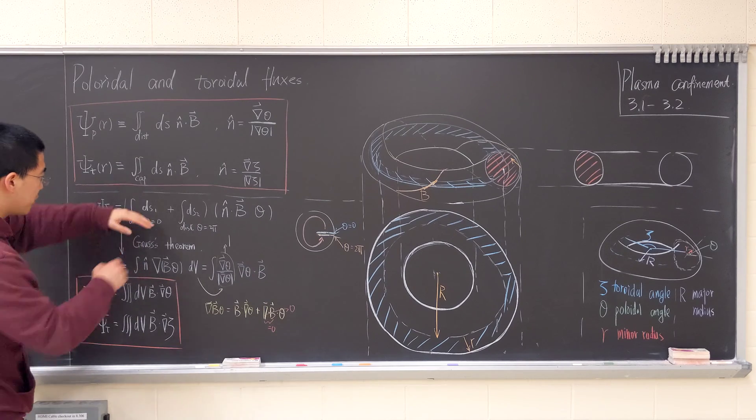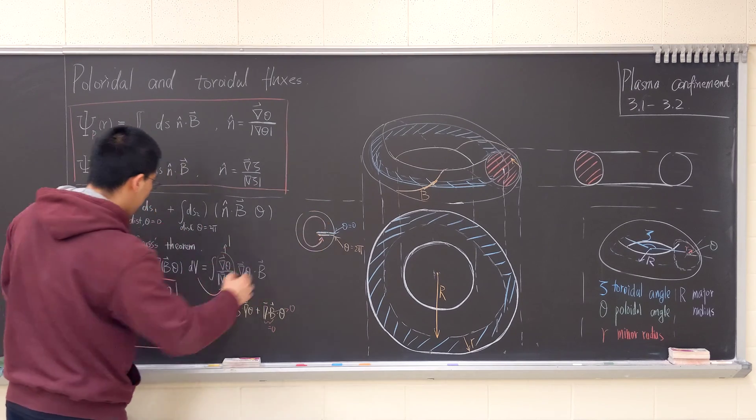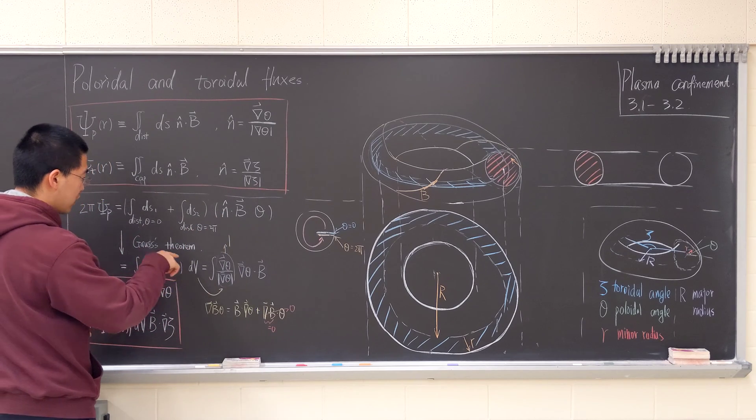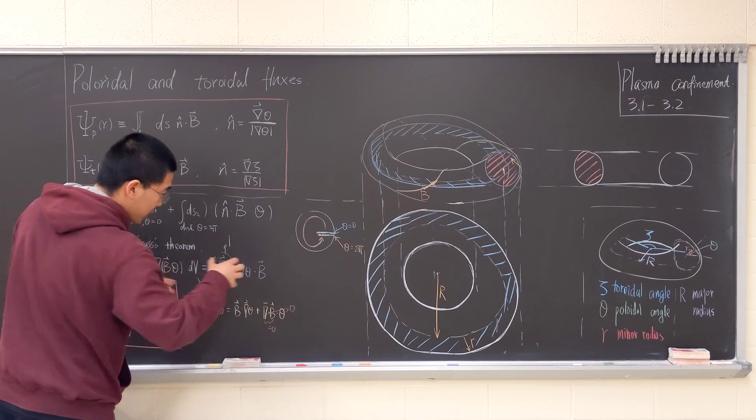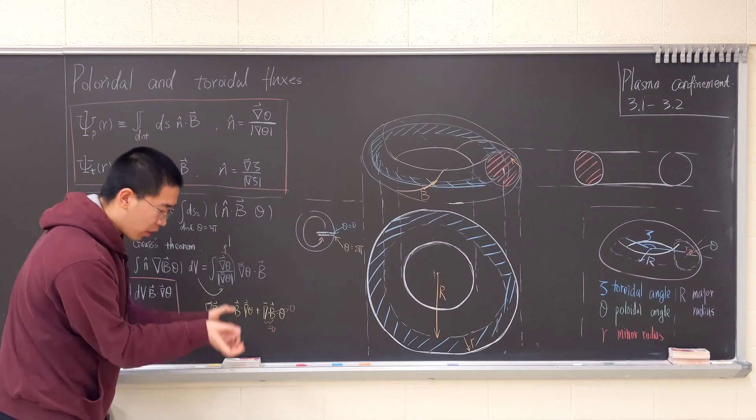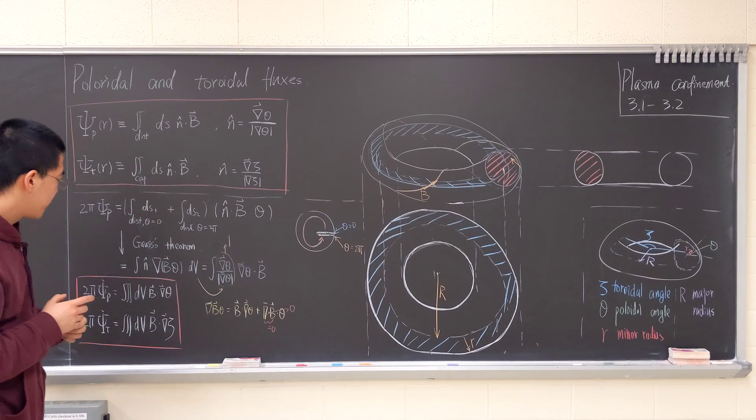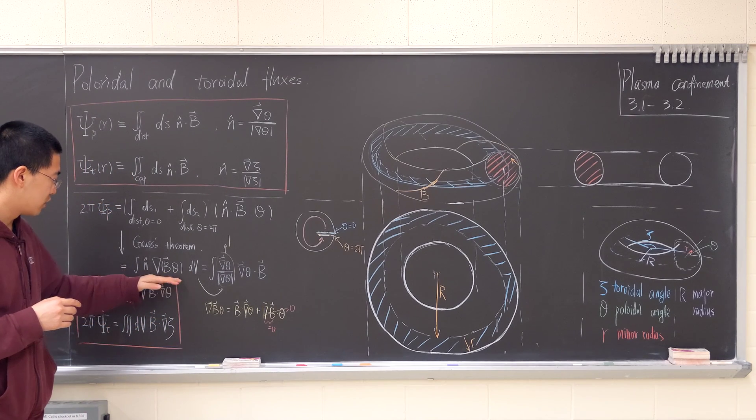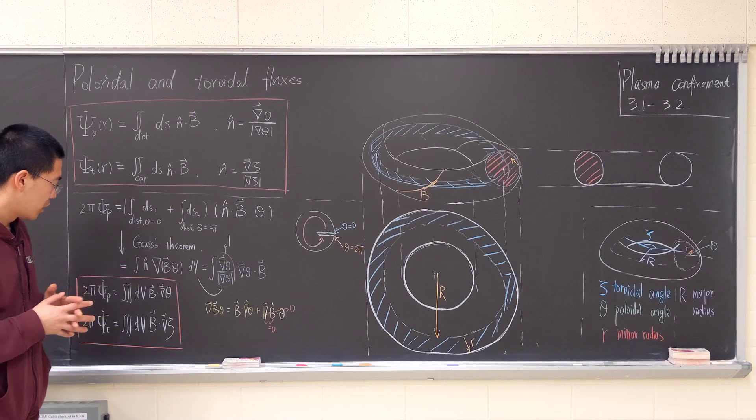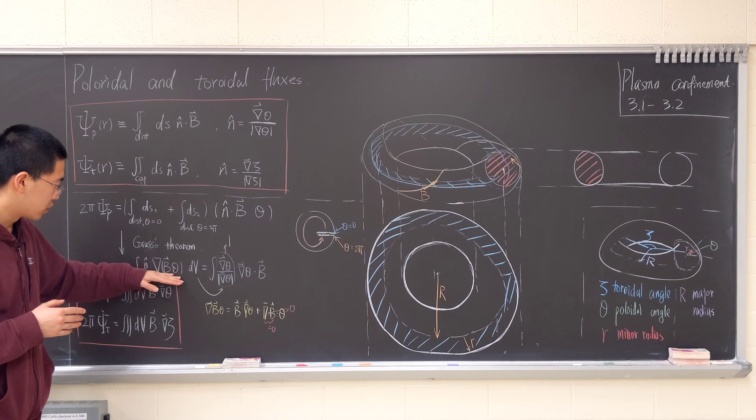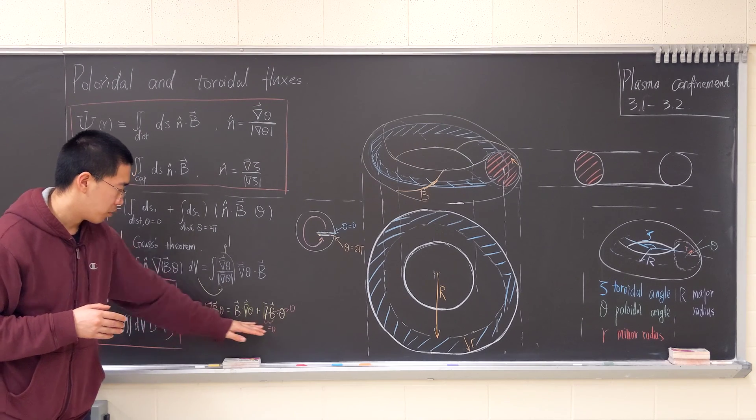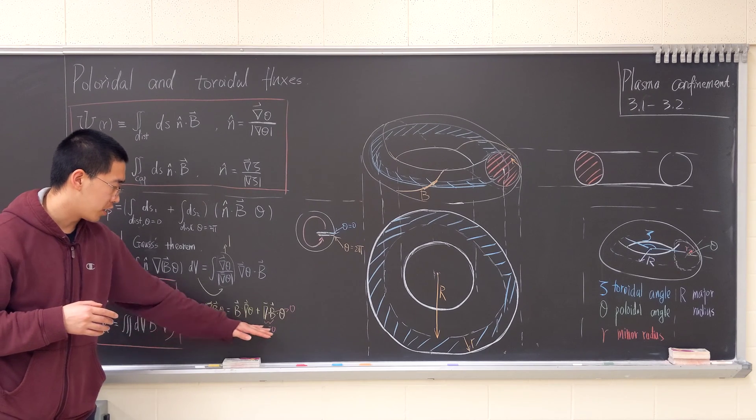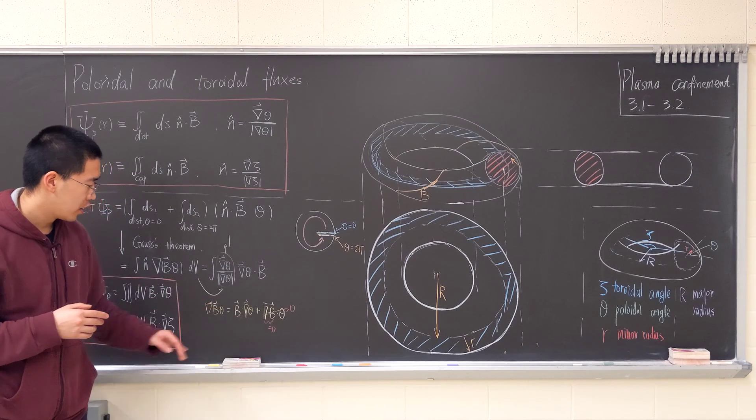And then we impose the Gaussian theorem, and basically we try to get the gradient of the whole thing, and integrate it within the whole volume of the donut. And the derivative, derivative doesn't act on this, if we act on both of them, on those two variables, we can, we know that from the Bloch identity, it can become, it can be expressed in this way.